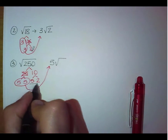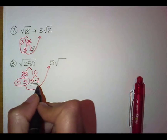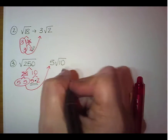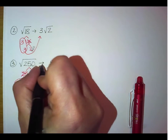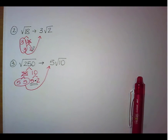Now notice that you have two terms left underneath here, just because you have the 5 and the 2. You're actually going to multiply them back together to give you 10 underneath your radical. So we would have square root of 250 is the same thing as 5 square roots of 10.